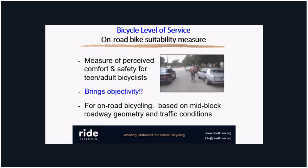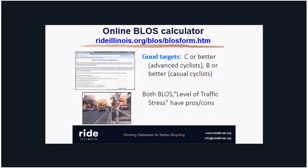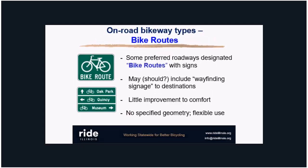When dealing with on-road facilities, there's a wide range of subjective opinions from elected officials and staff about what makes a road bike-friendly. I like to use an objective measure — the Bicycle Level of Service. It's based on mid-block roadway geometry and traffic conditions, and represents the perceived safety of a range of cyclists. We have a website calculator where you can do the calculations. There's also something called Level of Traffic Stress, which has come up more recently, though I still use Bicycle Level of Service.